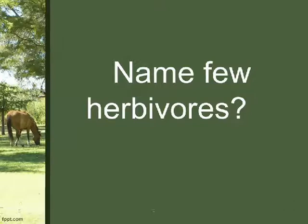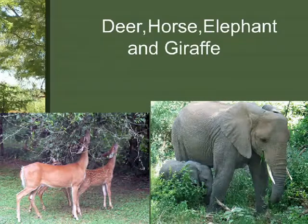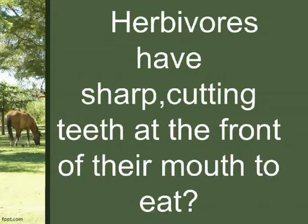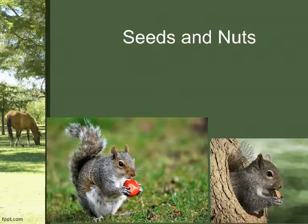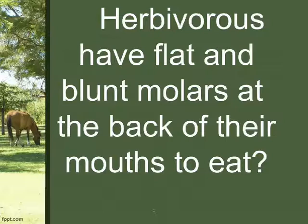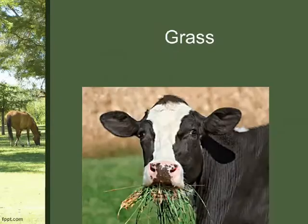Name a few herbivores: deer, horse, elephant, and giraffe. Herbivores have sharp cutting teeth at the front of their mouth to eat seeds and nuts. They also have flat and blunt molars at the back of their mouths to eat grass.